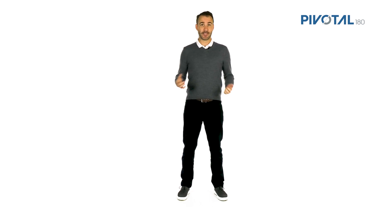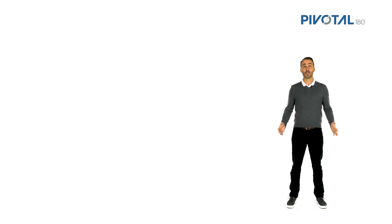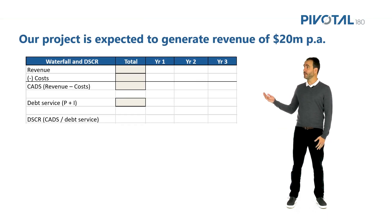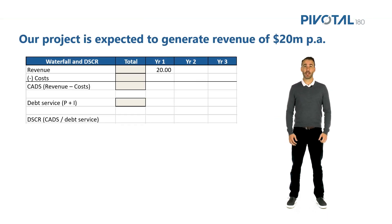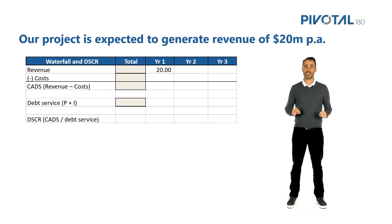Let's use an example to investigate this further. Say we have a project that is expected to generate revenue of $20 million per annum. In year one, we earn $20 million of revenue, exactly as planned. But in year two, we only get $16 million — that's $4 million less than planned.